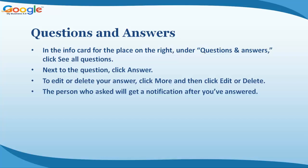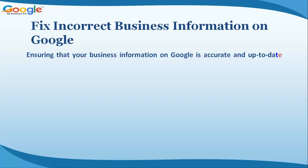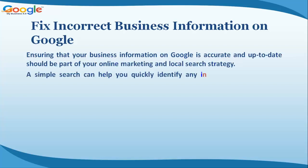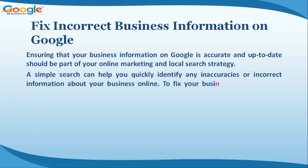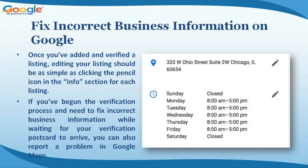The person who asked will get a notification after you've answered. Ensuring that your business information on Google is accurate and up to date should be part of your online marketing and local search strategy. A simple search can help you quickly identify any inaccuracies or incorrect information about your business online. To fix your business information on Google: add your business listing, verify your business, and edit your business information.